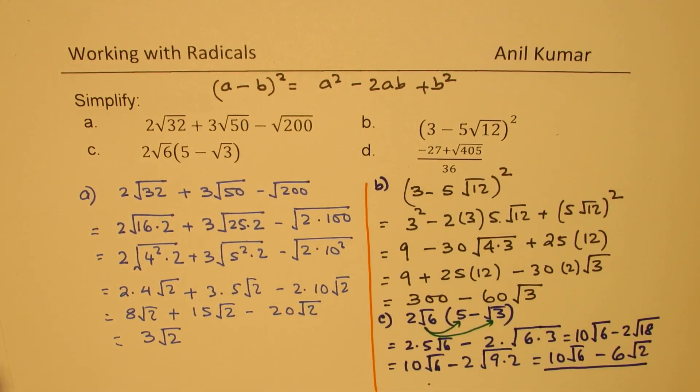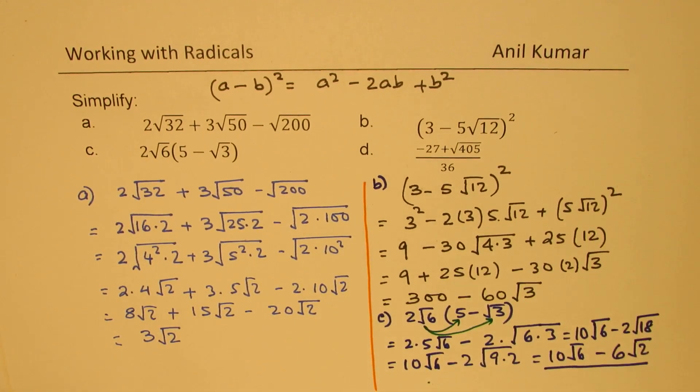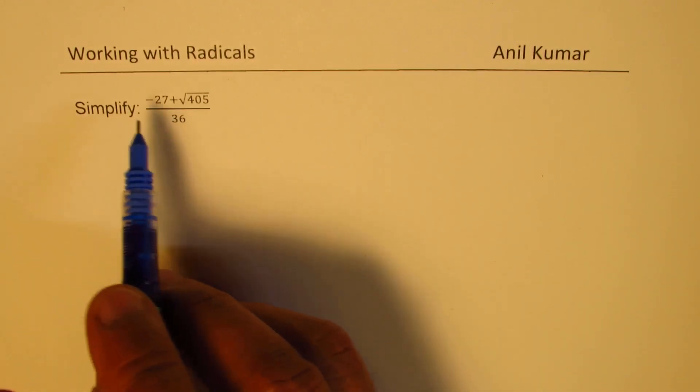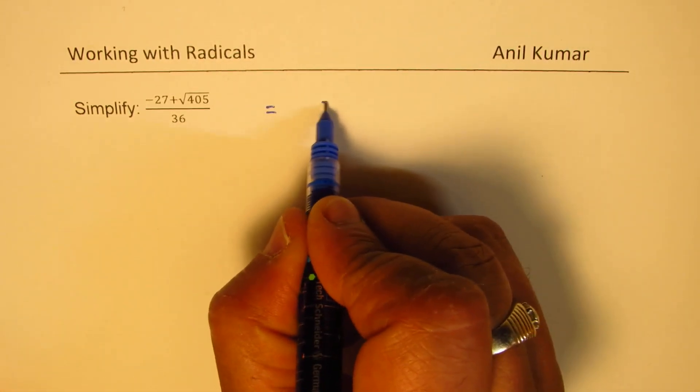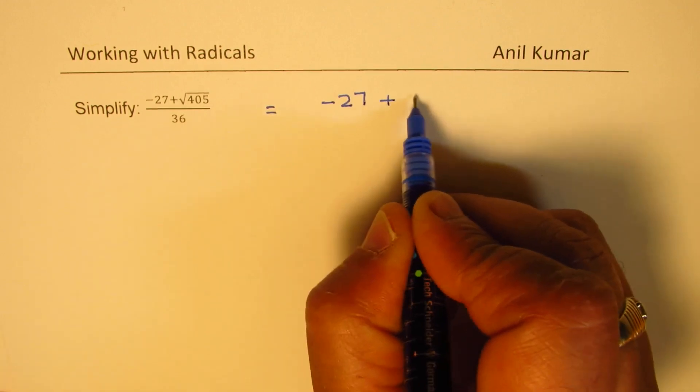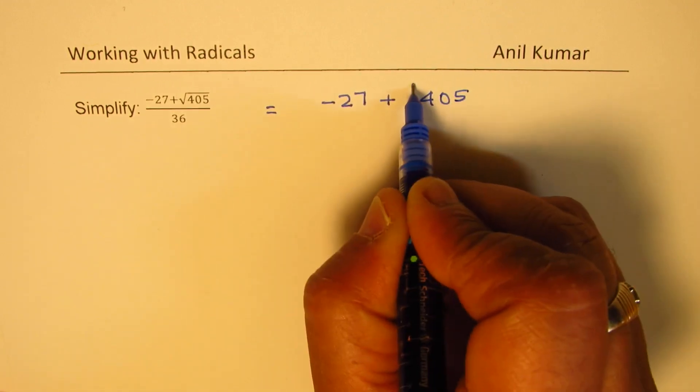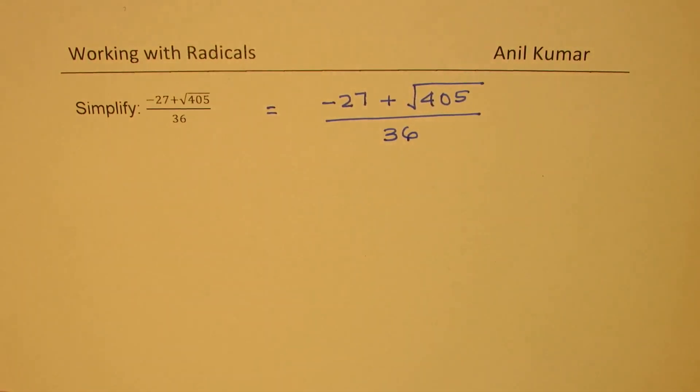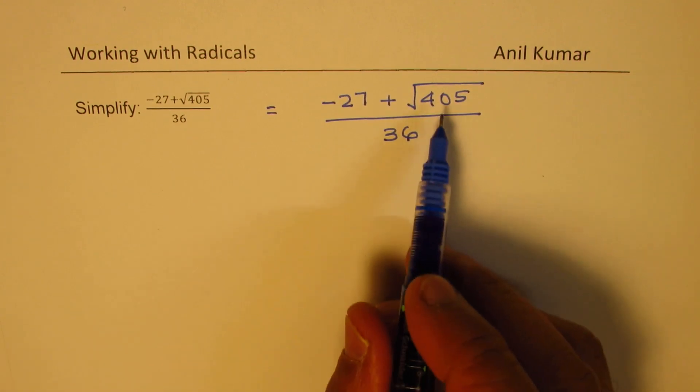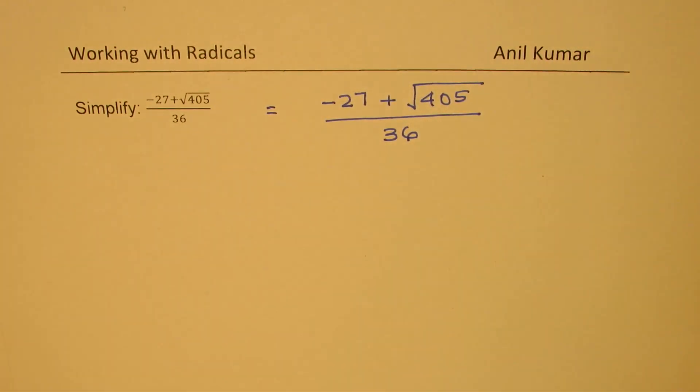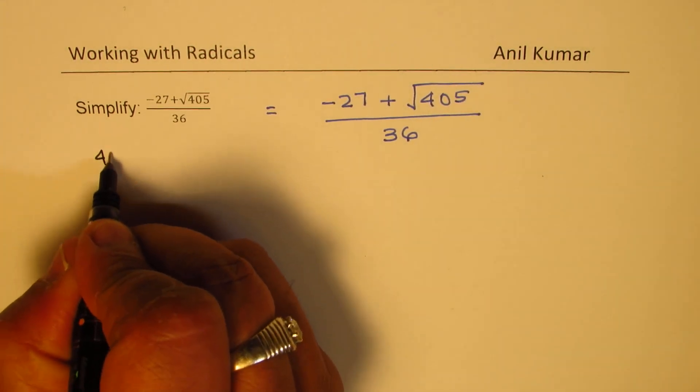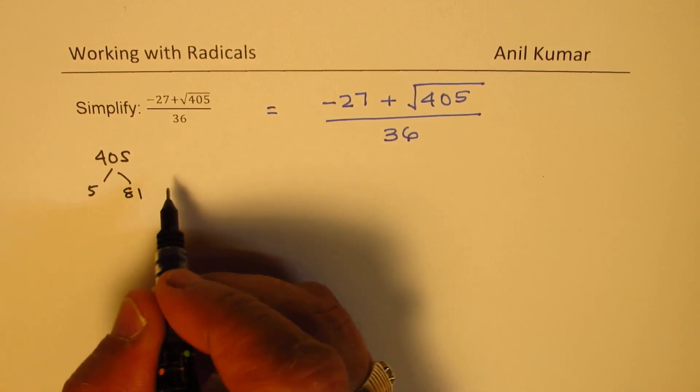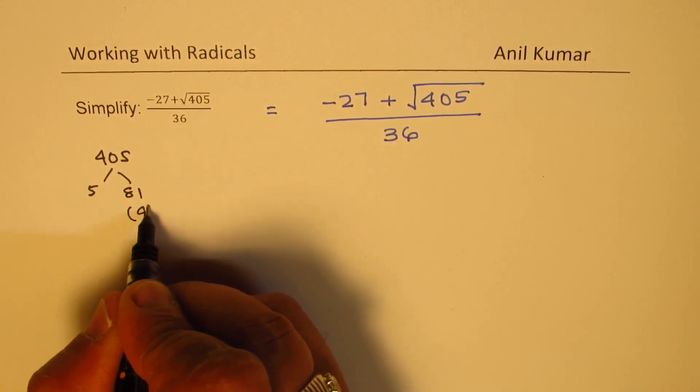Now part D, let's take it on a fresh page. So here we have, let's write it bigger and bolder. We have this as (-27 + √405) / 36. How do we work with 405? So let's do prime factorization of 405. So let's find factors of 405. Of course I can divide it by 5. So dividing by 5, I get 81 and 81 is 9 square. That makes sense.